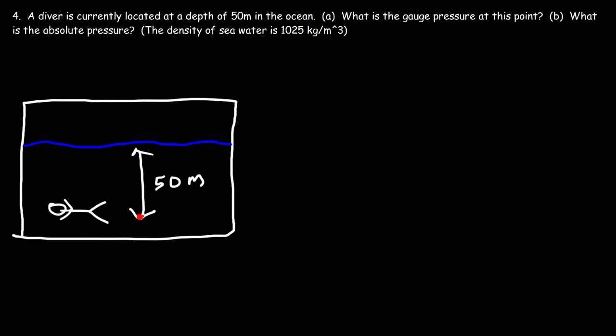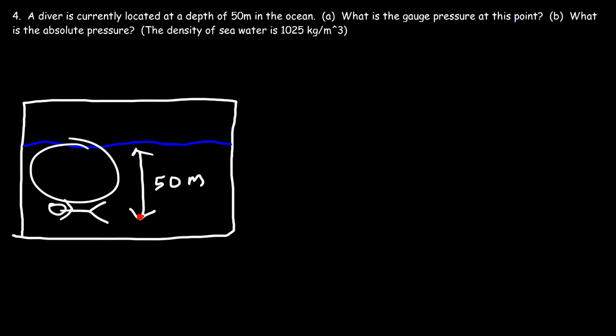The absolute pressure is based on the weight of the water above the diver plus the weight of the air above him. The weight of the water above the diver gives you the gauge pressure, and adding the weight of the air gives you the absolute pressure. So first we need to find the gauge pressure.